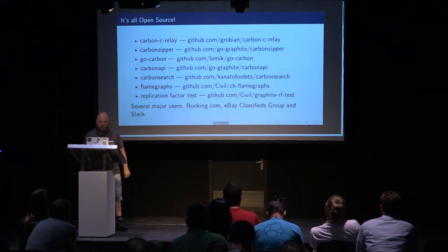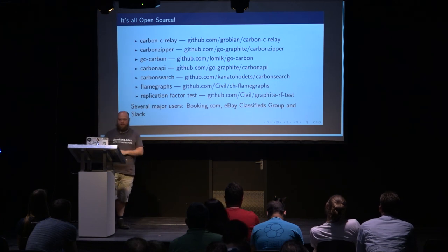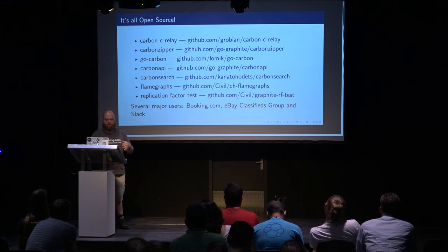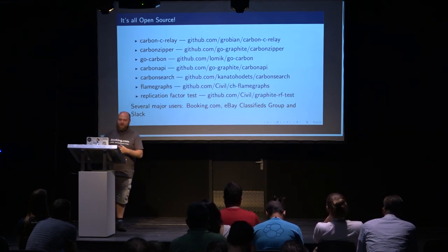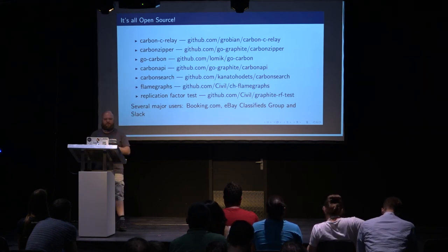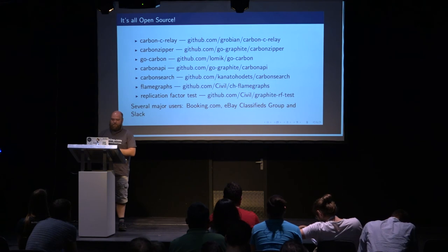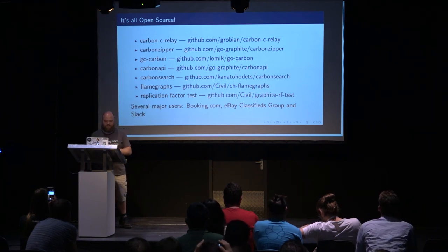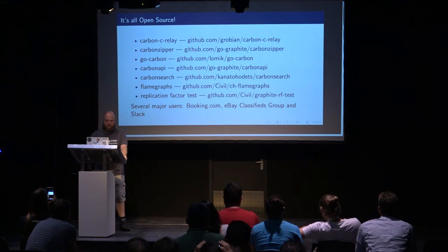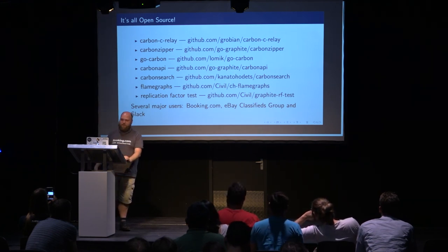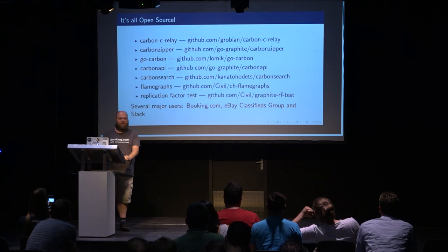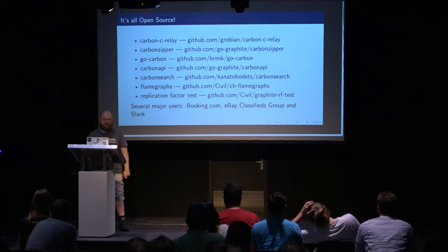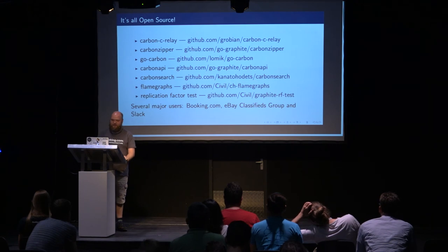All the stuff we have is actually open source — it was originally developed as an open source project. We're trying to aggregate everything related to our stack in a single GitHub group called go-graphite, though not everything is there yet. Not so long ago we also found out that at least two other companies have really big Graphite setups based on our stack: eBay and Slack, which is also really nice.